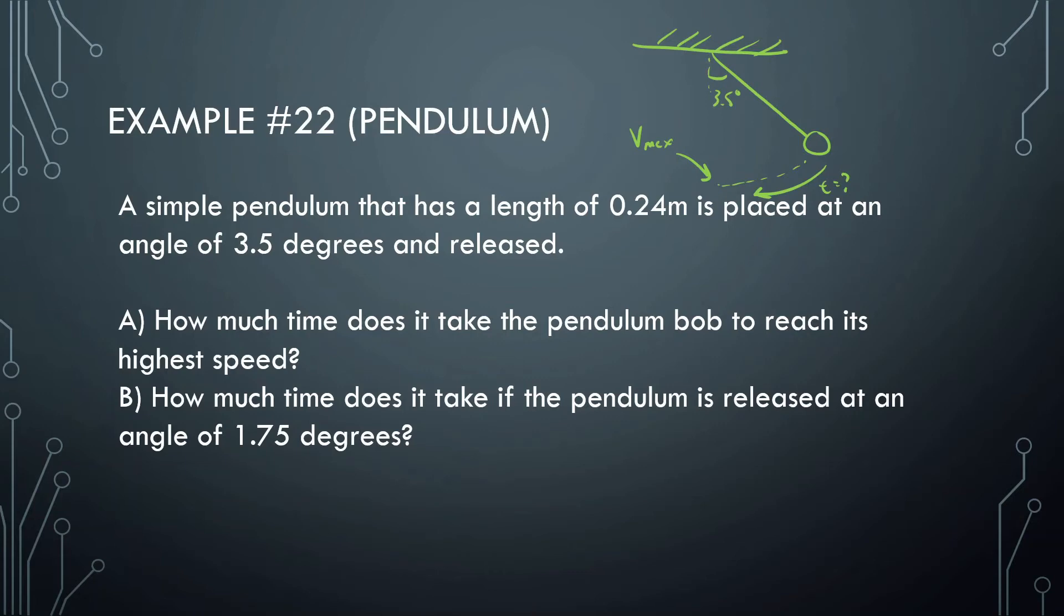I'm going to find the period. I know a period is equal to 2π times L over g, the length being 0.24, and gravity being 10. We're assuming we're on Earth. Let's figure out what the period is. 2π times square root of 0.24 divided by 10, and we get 0.97 seconds. So this is how long this pendulum would take to go all the way to the other side and all the way back.